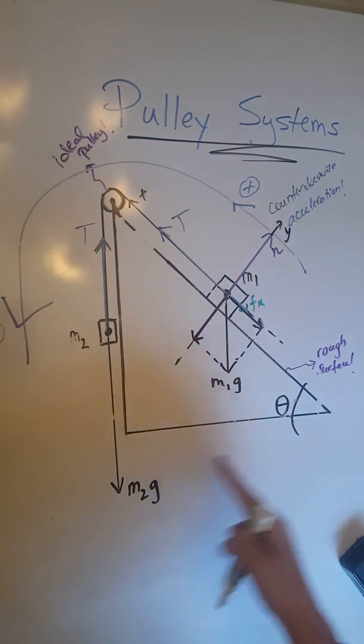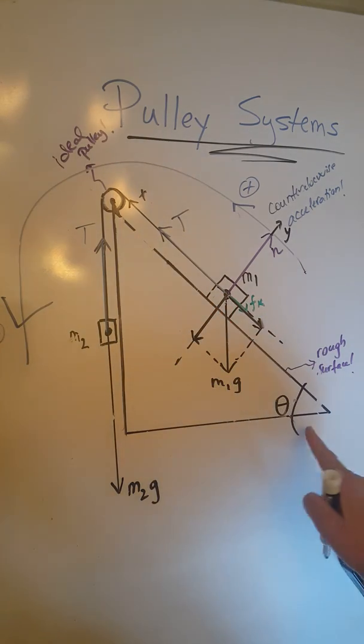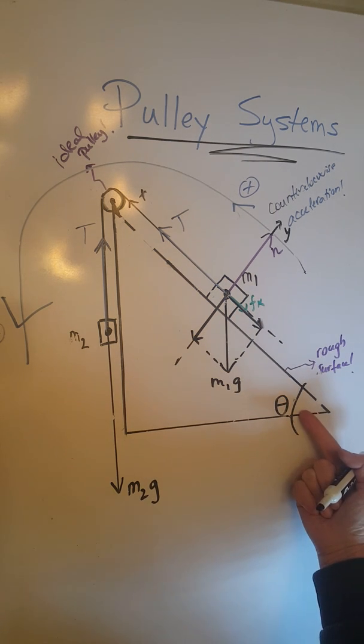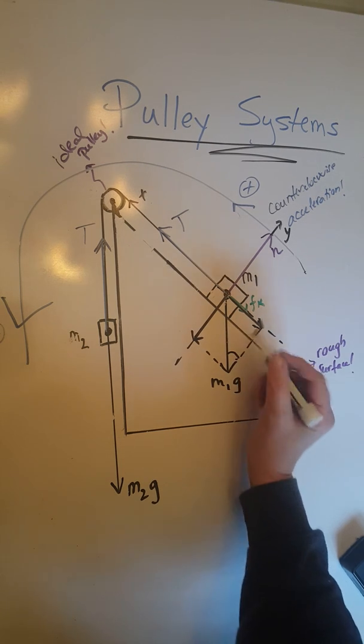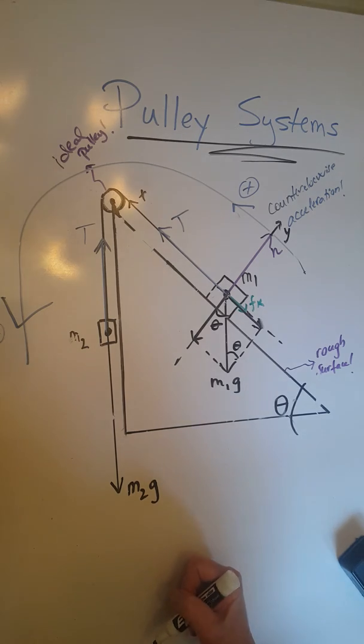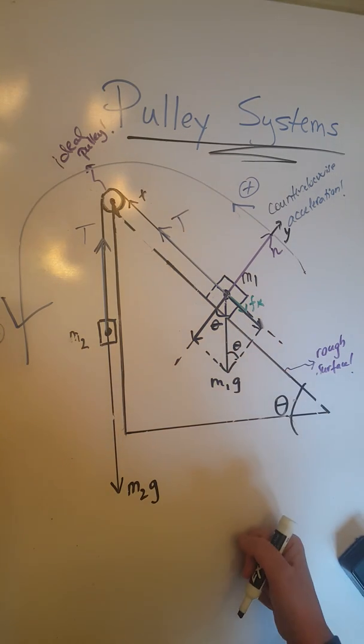If you remember, this big right triangle of inclination theta is similar to this small right triangle, so therefore this angle theta will have to be equal or congruent to this angle theta, which is also congruent to this angle theta. And that's going to help us with the two components of M1g.